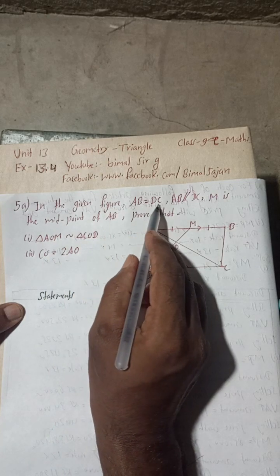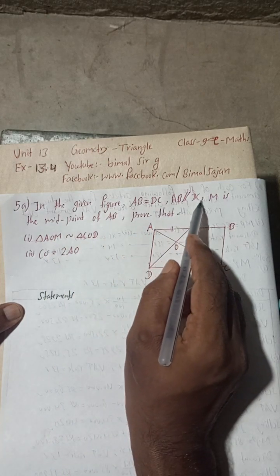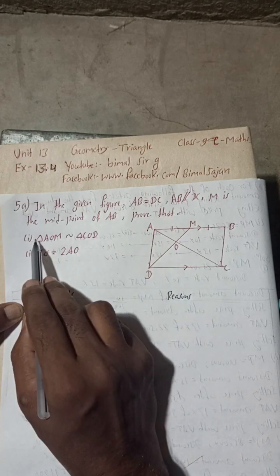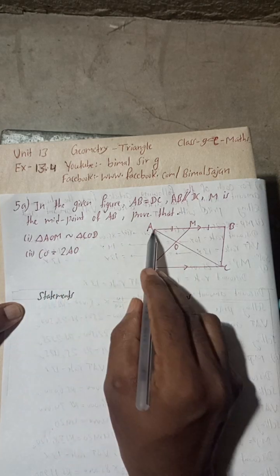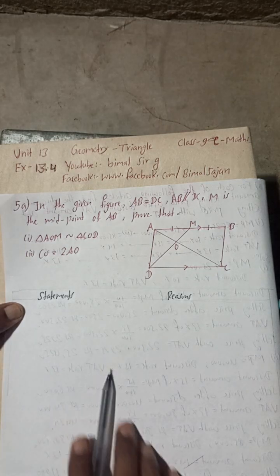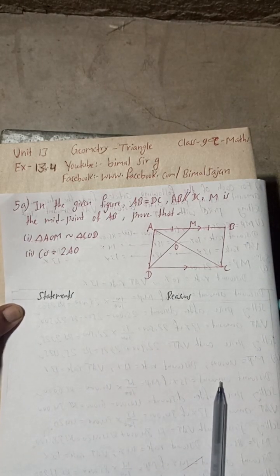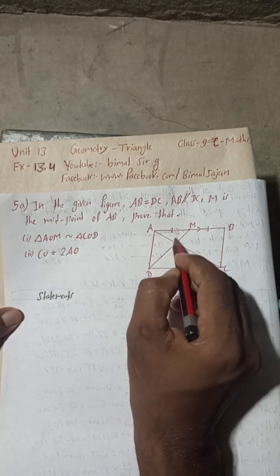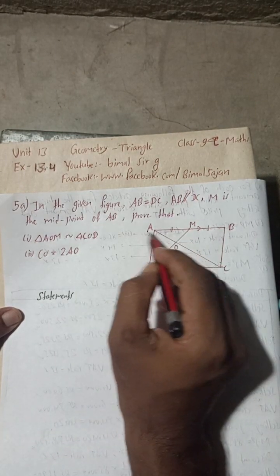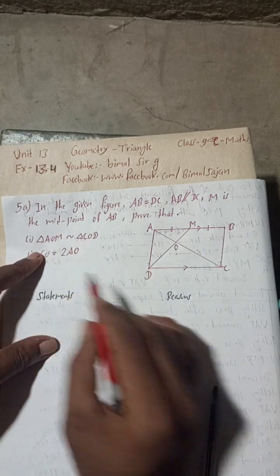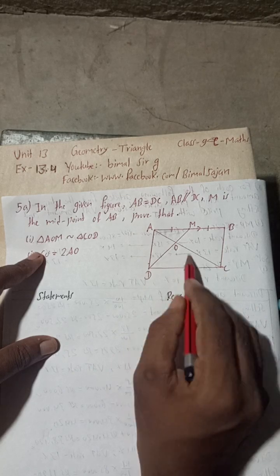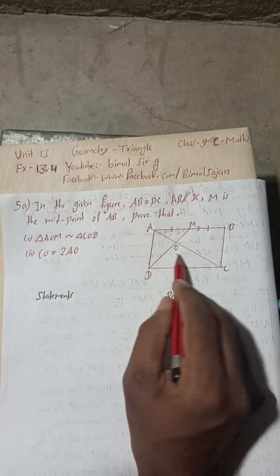In the given figure, AB is equal to DC, AB is parallel to DC, and M is the midpoint of AB. We have to prove that triangle AOM is similar to triangle COD — I will highlight these triangles with a pencil.